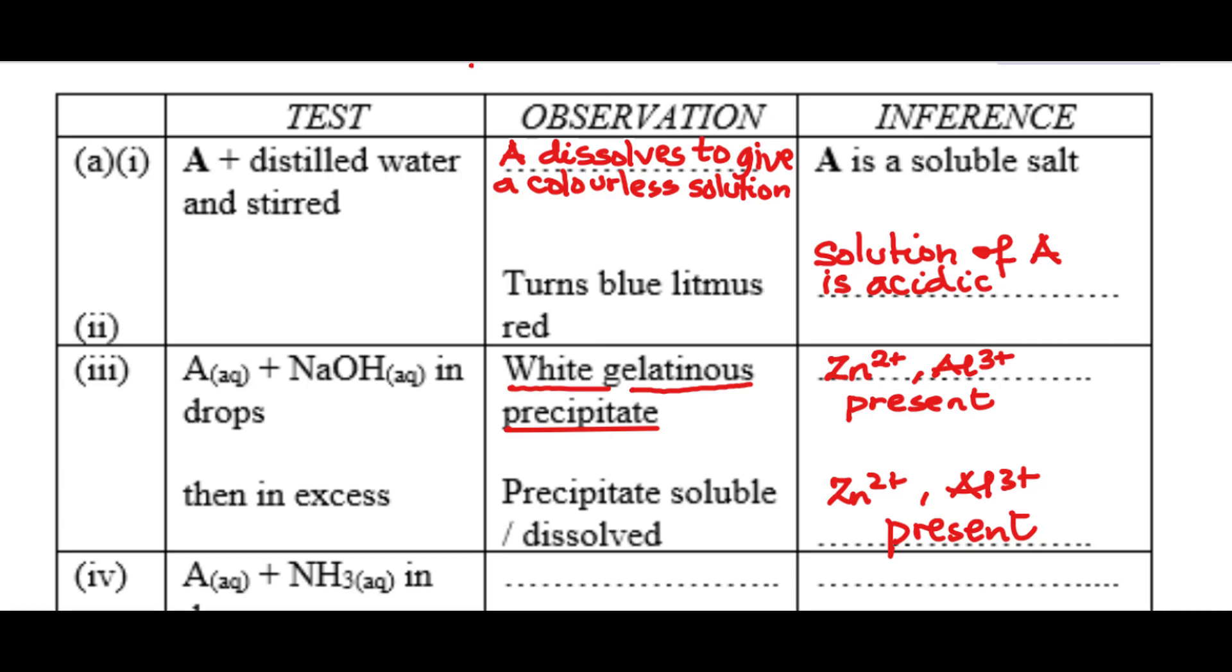If zinc ion is present, it will form a white precipitate with ammonia in drops and then dissolve in excess. If it is aluminum ion that is present, it will only form a white precipitate with aqueous ammonia in drops but will not dissolve in excess. So let's see.